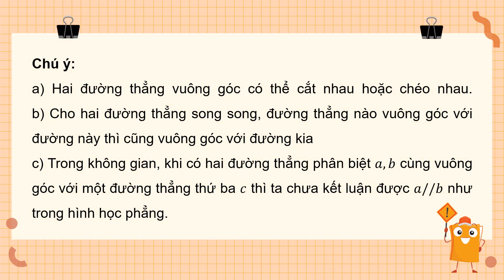Chú ý thứ nhất: hai đường thẳng vuông góc có thể cắt nhau hoặc chéo nhau. Chú ý thứ 2: cho hai đường thẳng song song, đường thẳng nào vuông góc với đường thẳng này thì cũng vuông góc với đường thẳng kia. Chú ý thứ 3: trong không gian, khi có hai đường thẳng phân biệt A, B cùng vuông góc với một đường thẳng thứ 3 là C, thì chưa kết luận được A song song với B, vì đó có thể là hai đường thẳng chéo nhau.